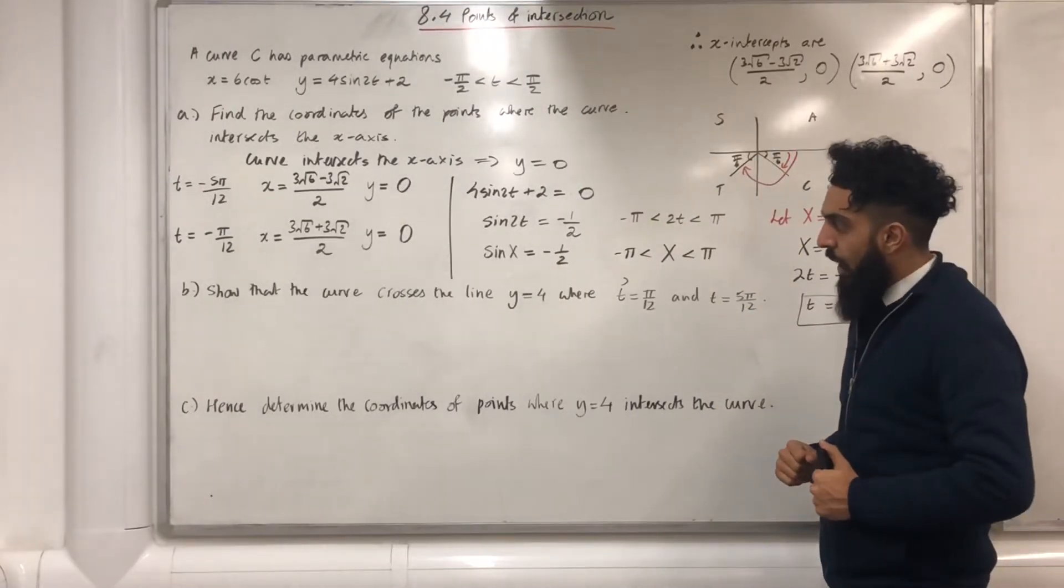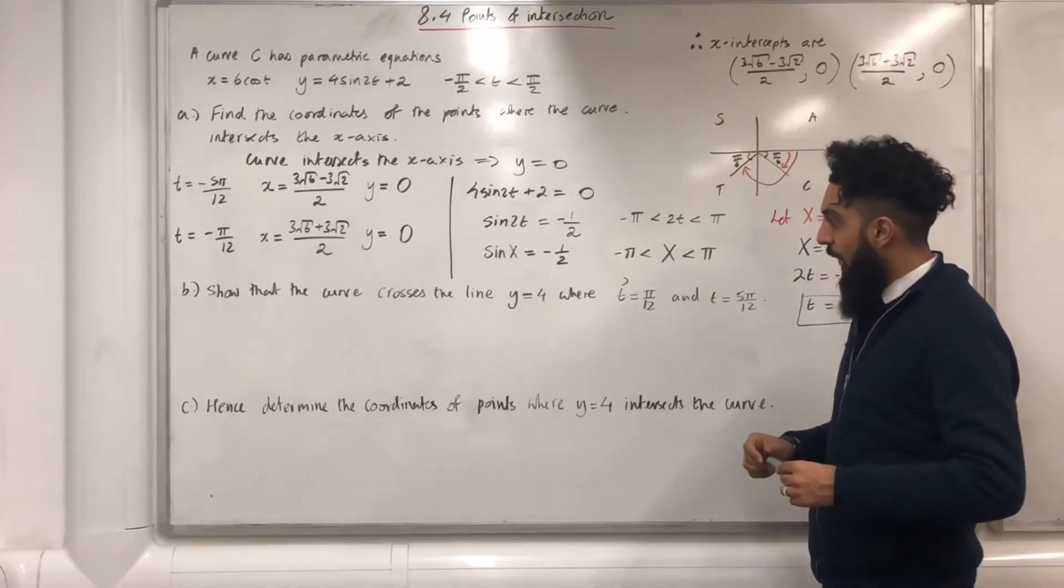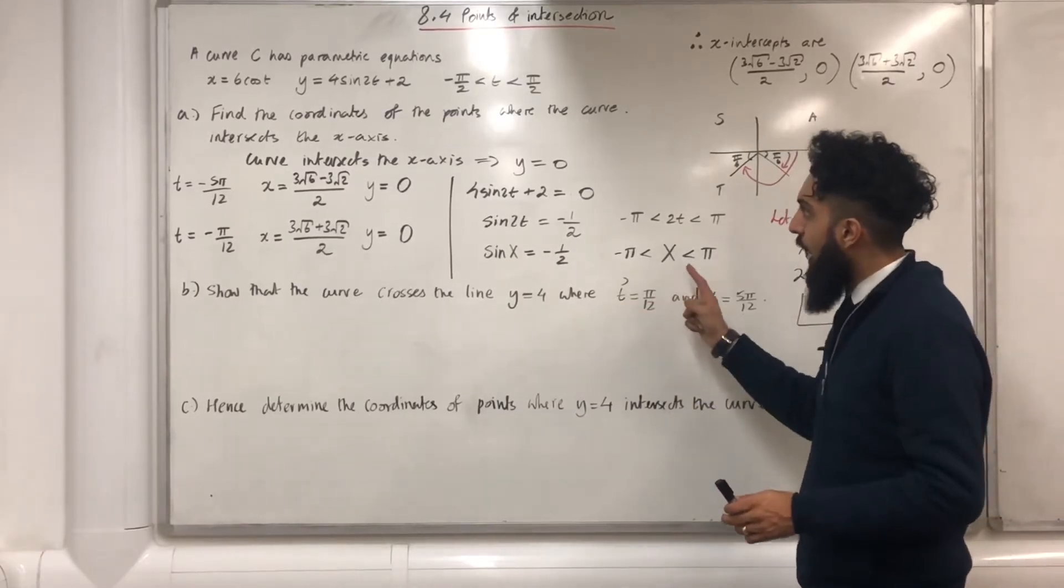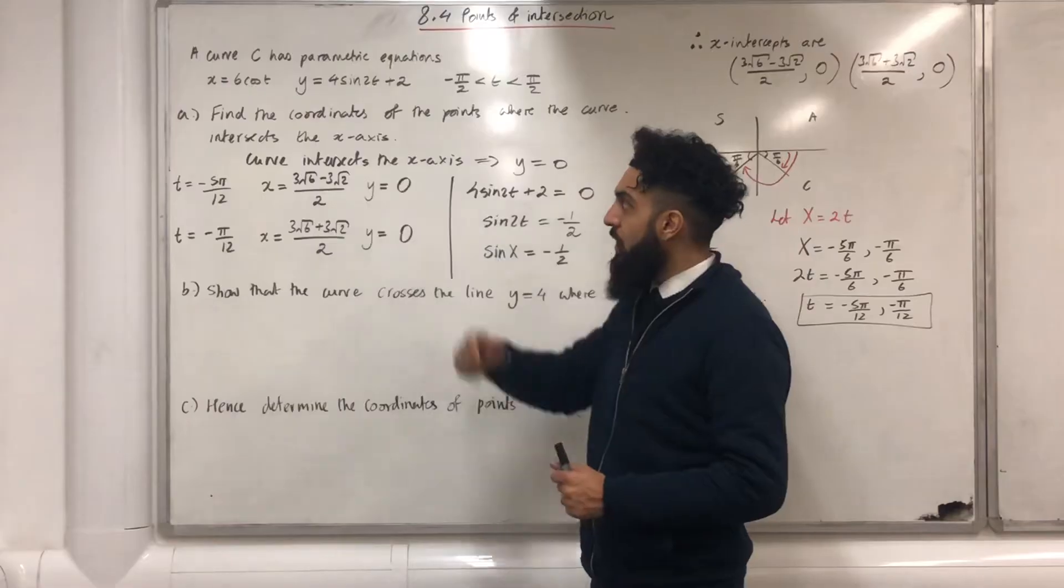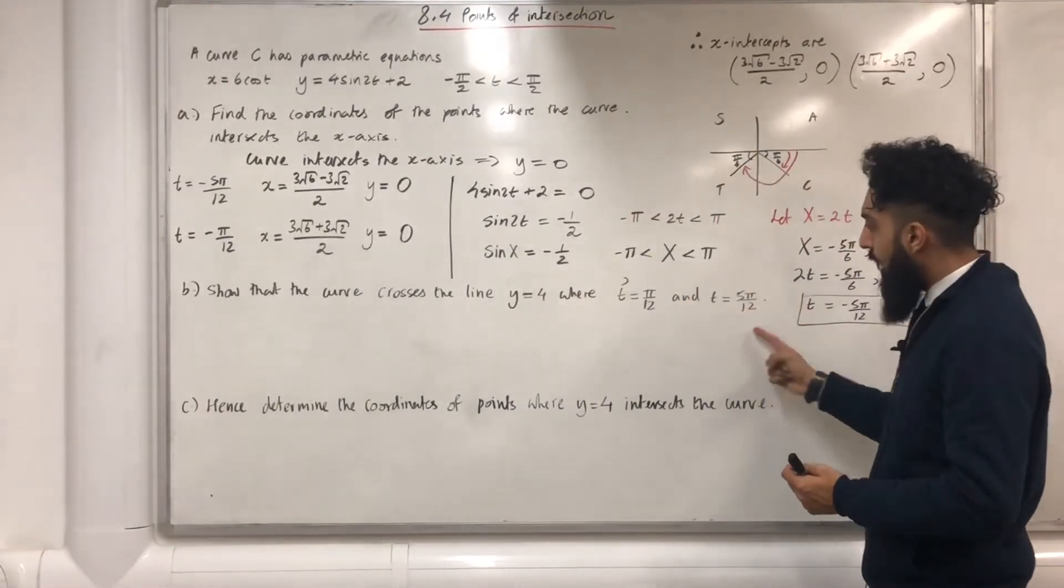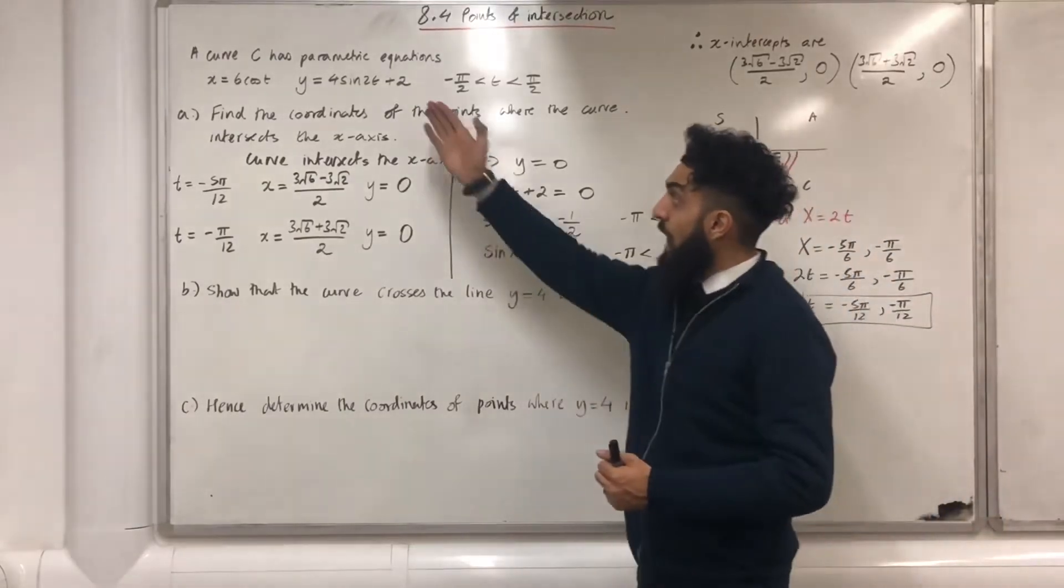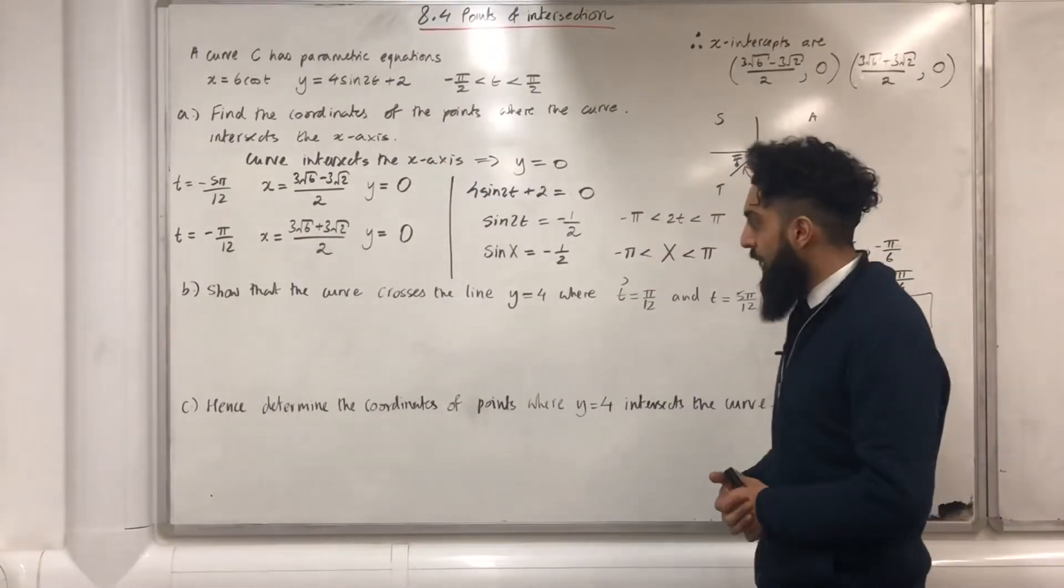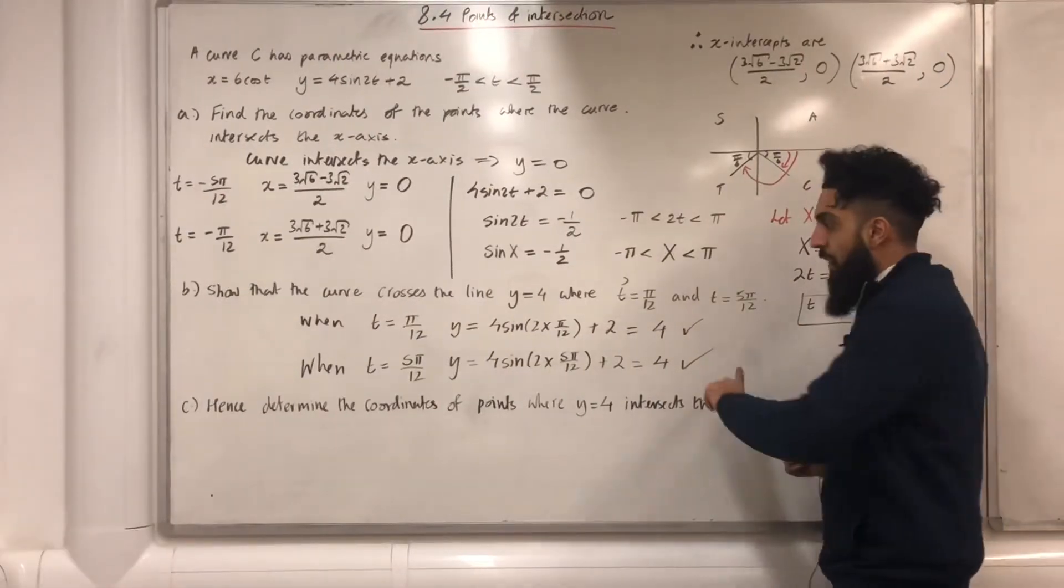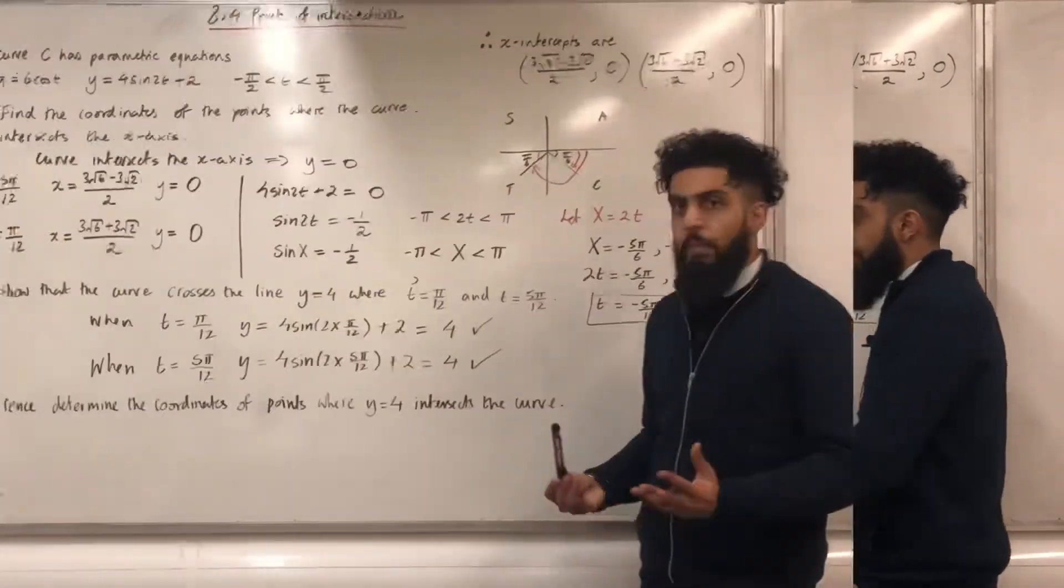Show that the curve crosses the line y equals 4, where t is equal pi over 12, and t is equal 5 pi over 12. Take t equal pi over 12, and put it into the y-equation, and show that I get y equal 4. Then, take t equal 5 pi over 12, put it into the y-equation, and show that I get y equal 4. Here is the working out to part b.